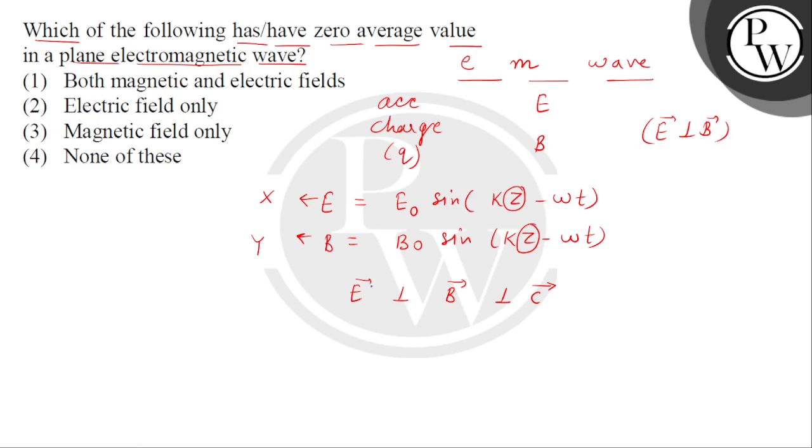Now, if we check the equations of both electric and magnetic fields, we find the sine function. It means both the fields are sinusoidal.